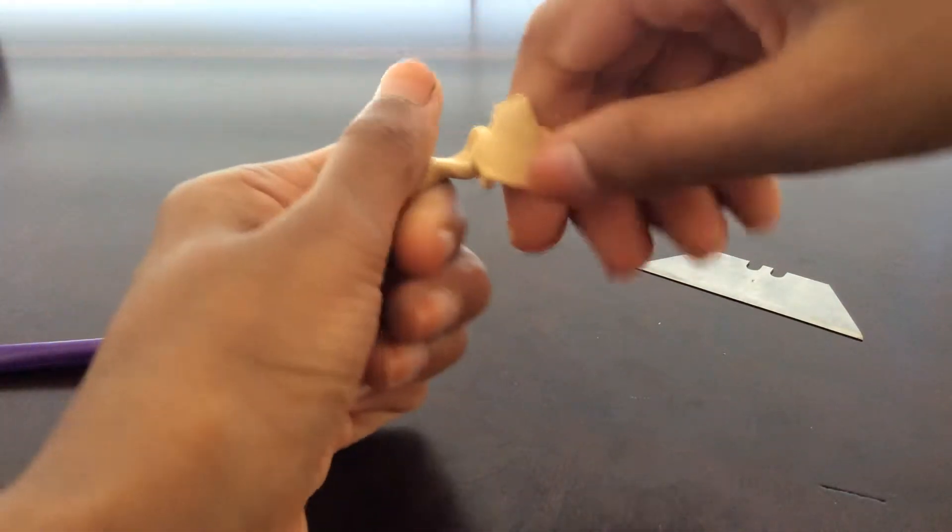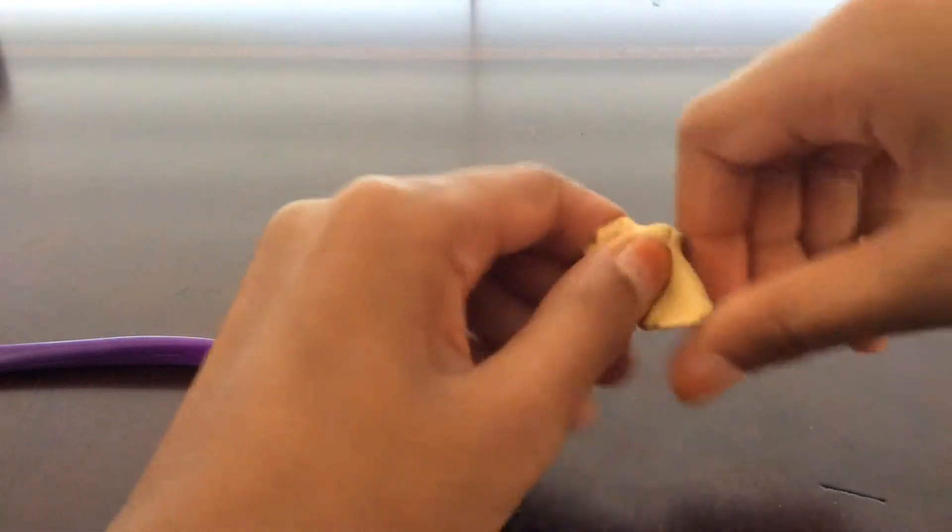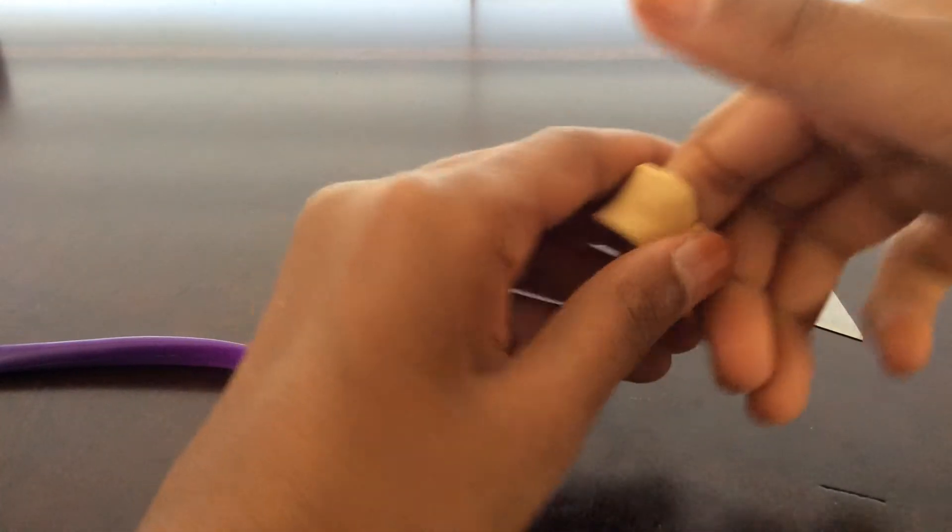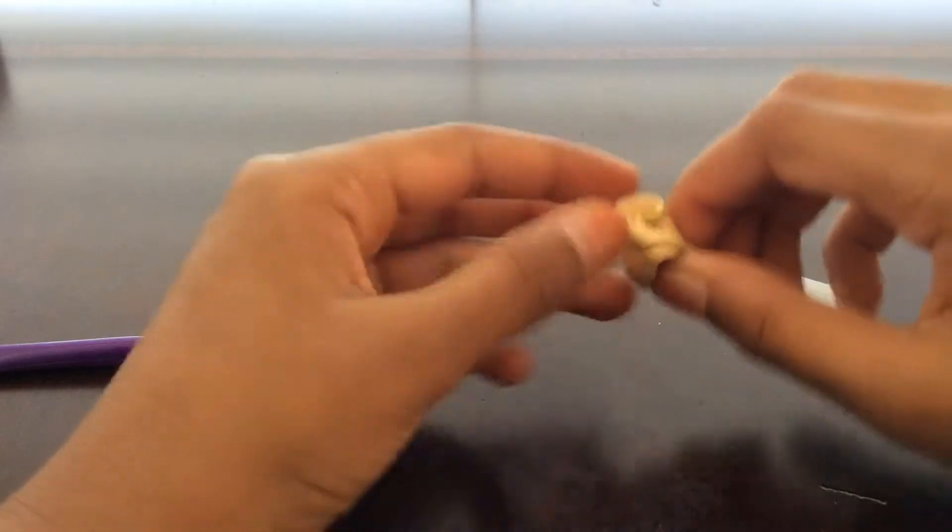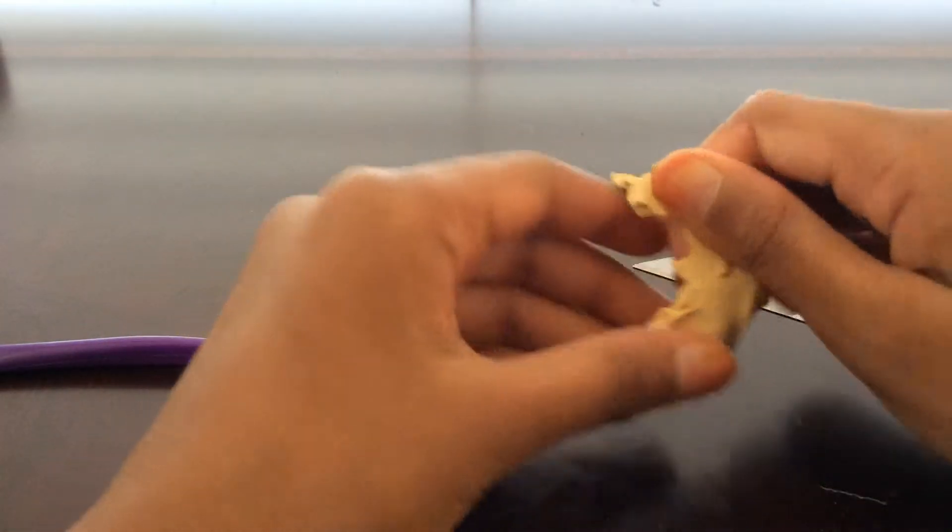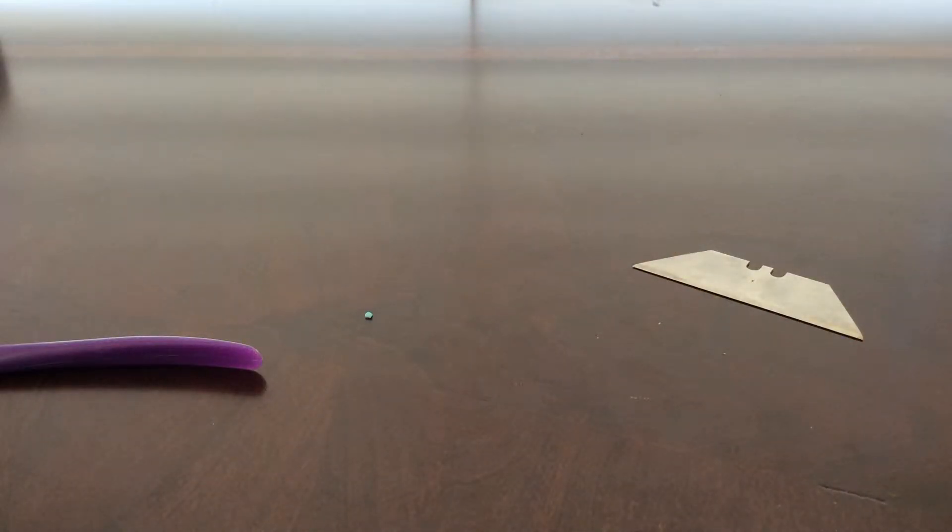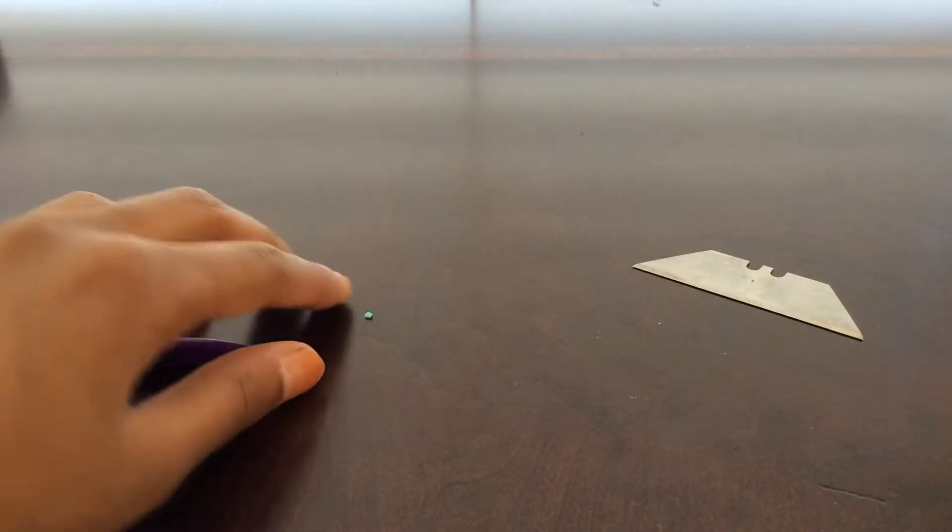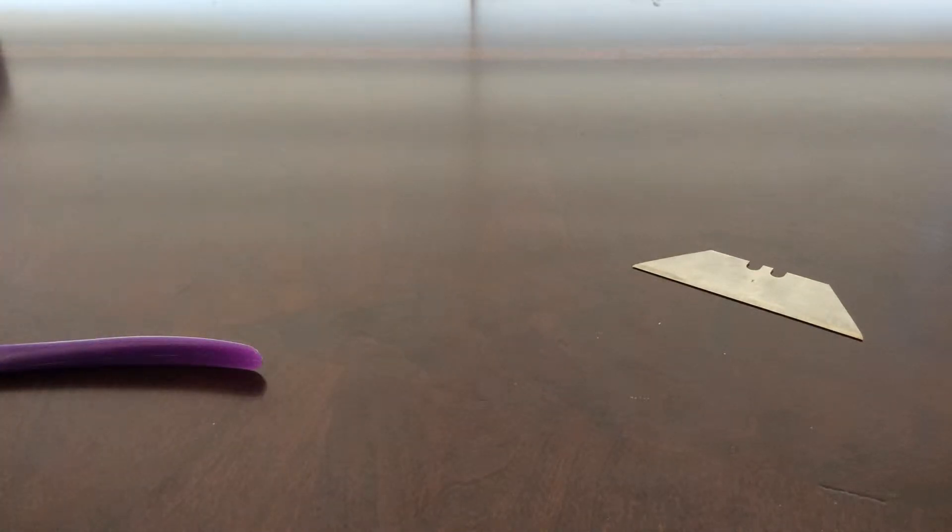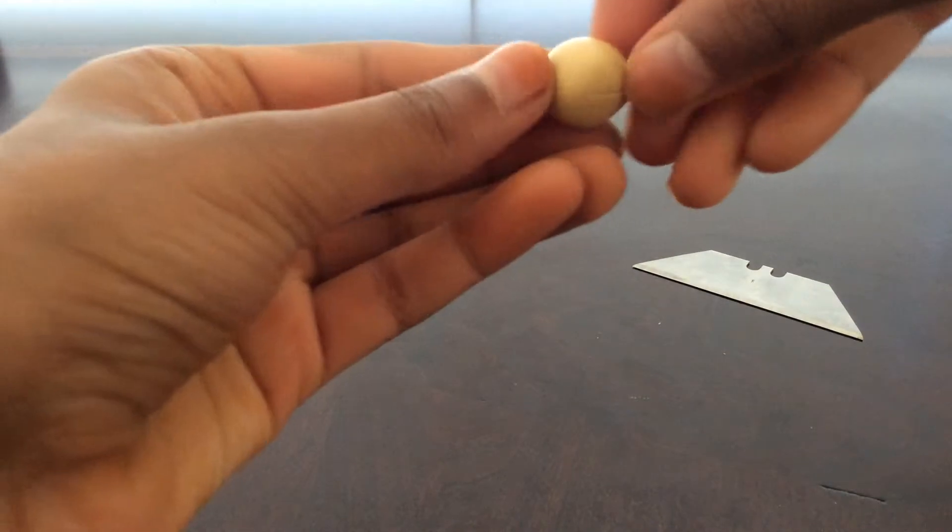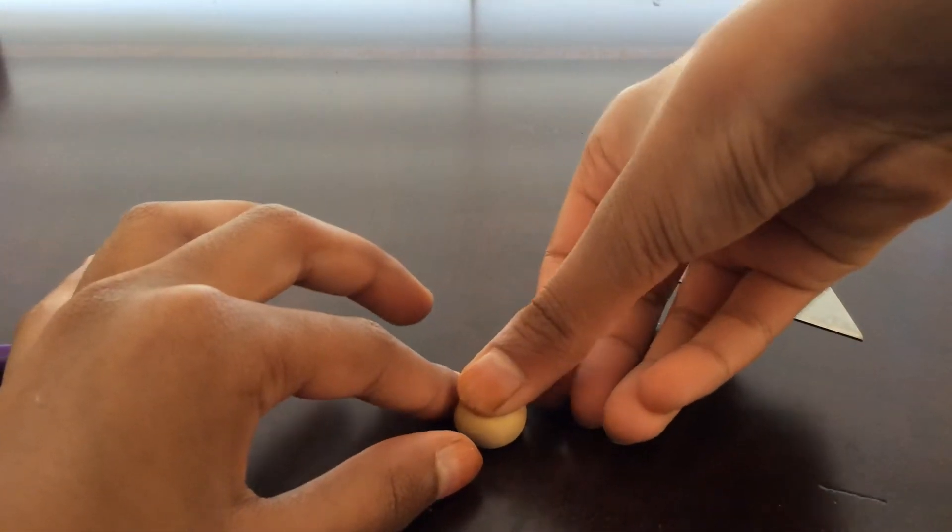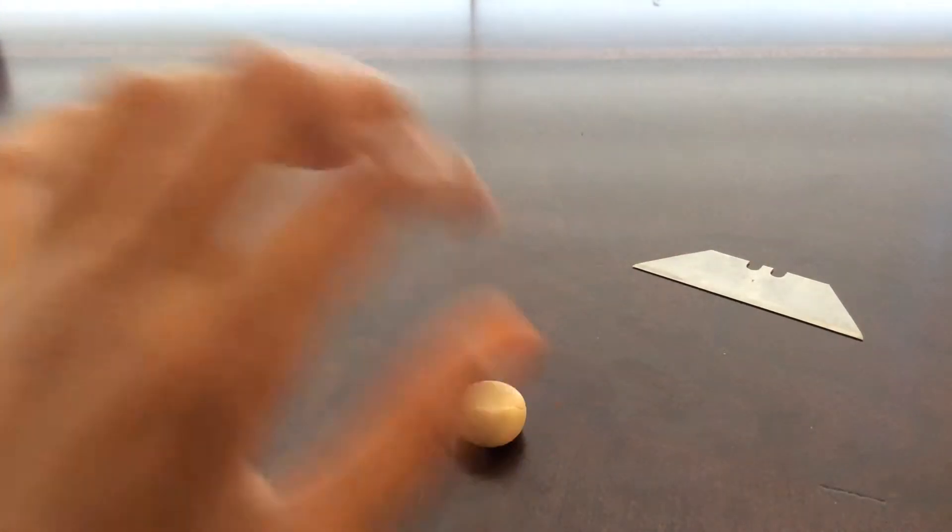You're just going to squish it and condition it, and then roll it into a ball. It should look something like this. Flatten it down.